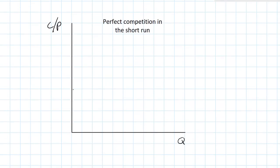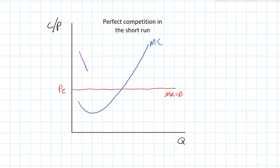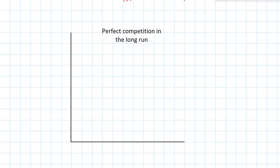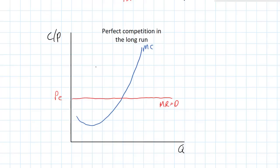Let's now look at a perfectly competitive firm in the short run. We've got cost and price on the vertical axis, a horizontal marginal revenue and demand curve determined by the price in the market, and an upward sloping marginal cost curve. The profit-maximizing level of output is where MC equals MR. This firm is experiencing economic profits because at the MC equals MR point, the price is higher than its ATC. In the long run, the existence of economic profits will be eliminated as new firms enter the market, and the price will fall to the minimum average total cost of the individual firm.